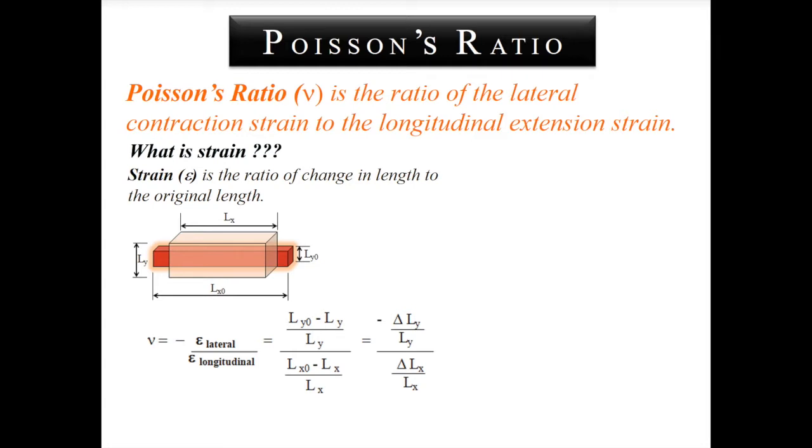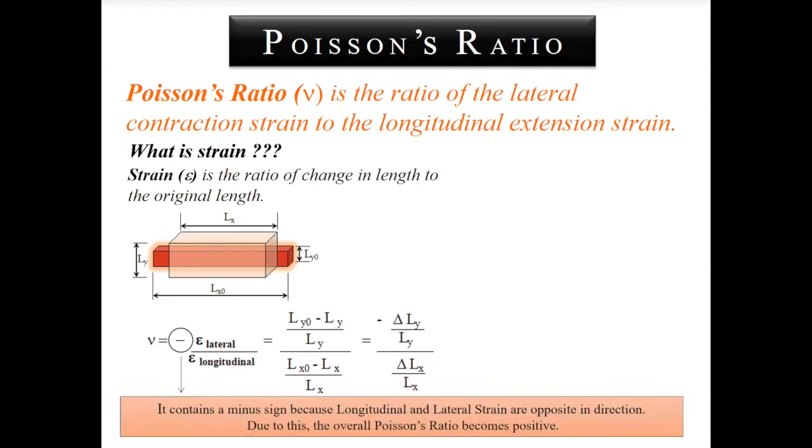In other words, this is the ratio of the change in the original dimension in the y direction to the change in the dimension to the original dimension in the x direction. But why is Poisson's ratio negative? It is because longitudinal and lateral strain are opposite in direction. Due to this, the overall Poisson's ratio becomes positive for the conventional materials. Here, you can see the behavior of our conventional material having positive Poisson's ratio.